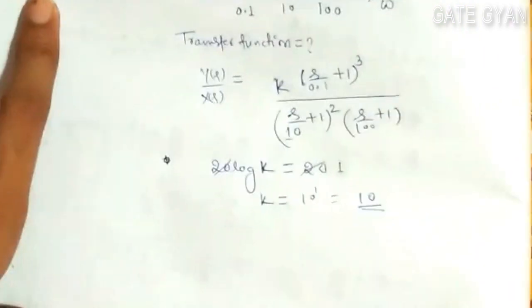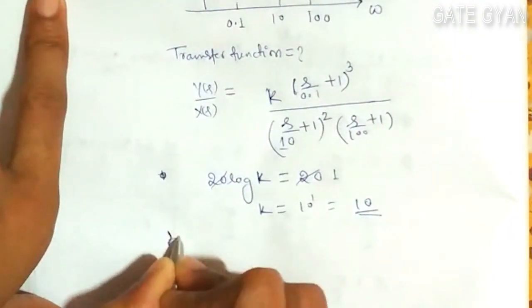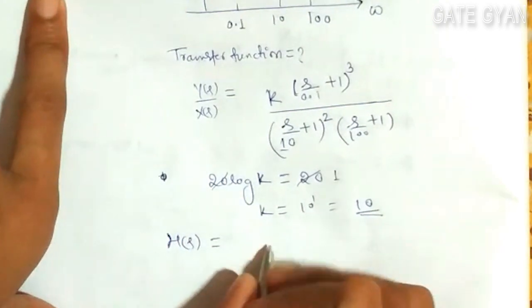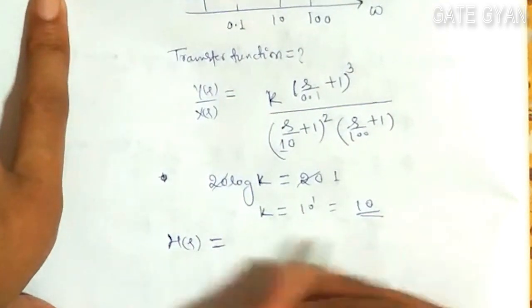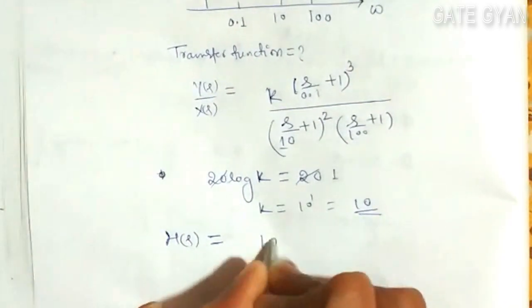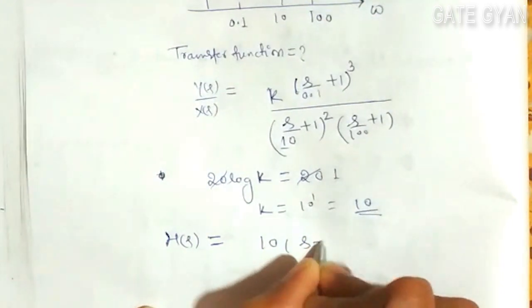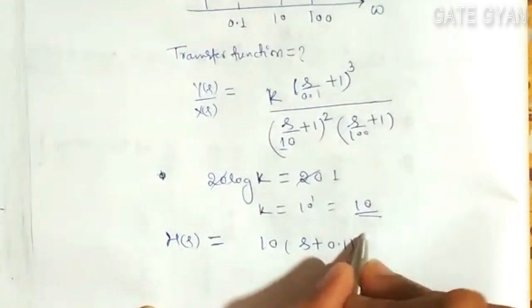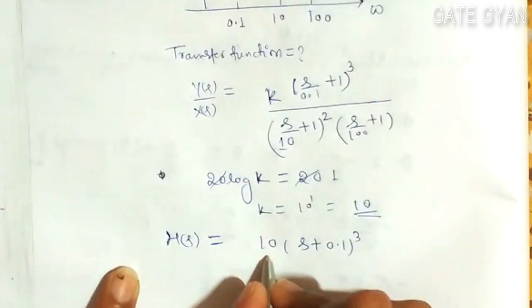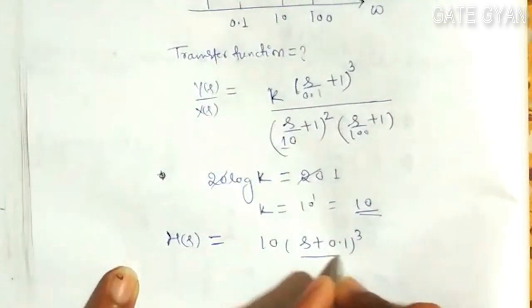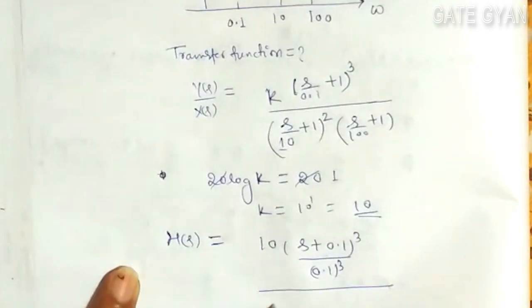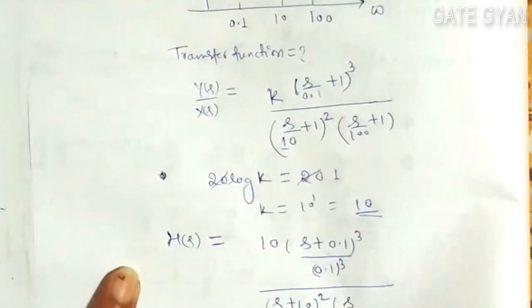Now, I will more simplify. So, my transfer function, H(s), is going to be 10 times (s + 0.1) cube upon 0.1 cube, divided by (s/10 + 1) whole square times (s/100 + 1).